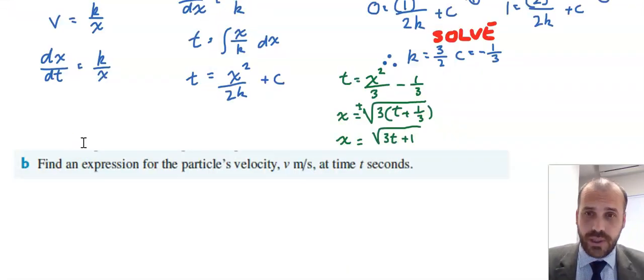To this question, given we now know this bit here, we have enough information to find an expression for the particle's velocity at time t seconds. So something we know more traditionally, velocity equals something time.